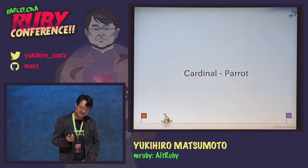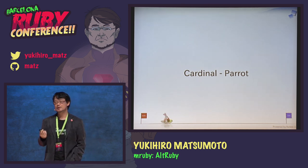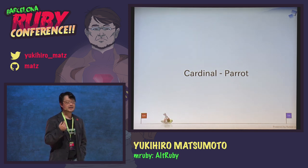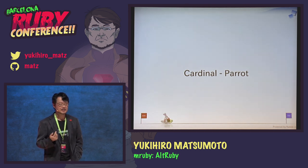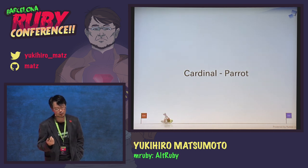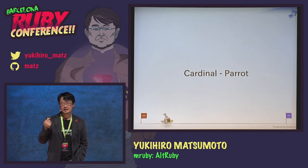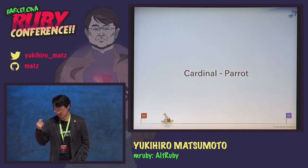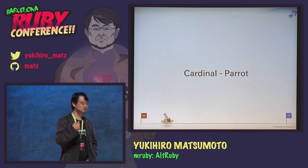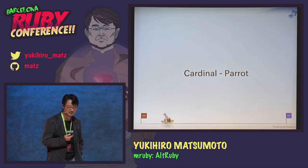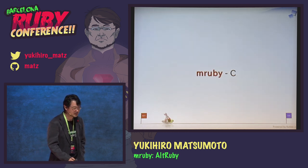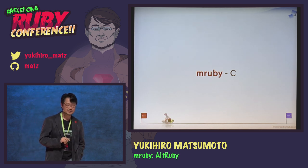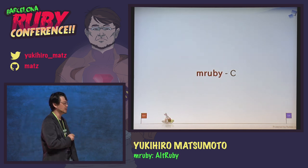It is kind of easy to implement 80% of the Ruby programming language, but it is quite difficult to get to maybe 99% compatibility. Some people, like those behind JRuby and Rubinius, did that great task. I'm proud of them. Today I'm going to talk about yet another alternative implementation named MRuby, on top of C.